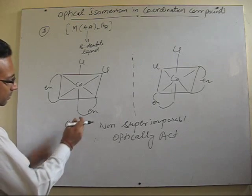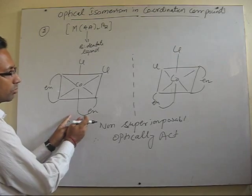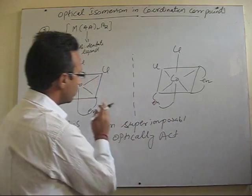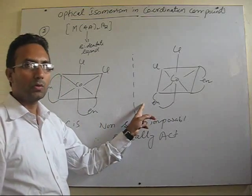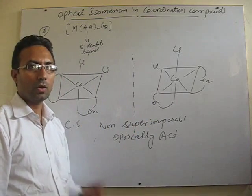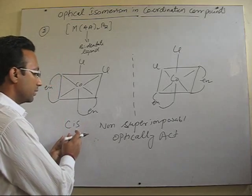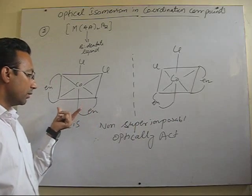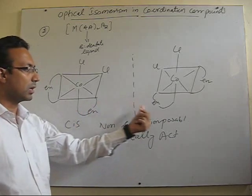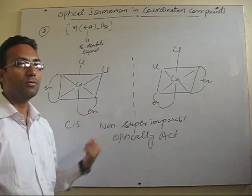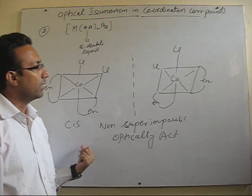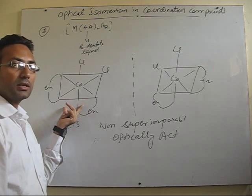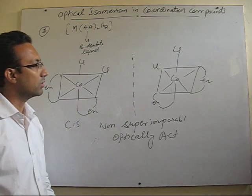Now, if this particular isomer is dextro, then obviously the other will be levo. But which one is dextro and which one is levo, we cannot predict theoretically — this you should always remember. This can also be dextro or levo, but it has to be found experimentally. We have to find through a polarimeter in which direction the plane polarized light is rotated by either of these two isomers.